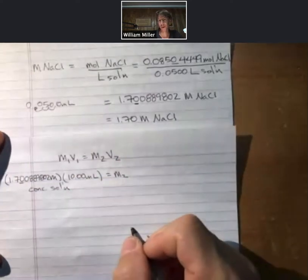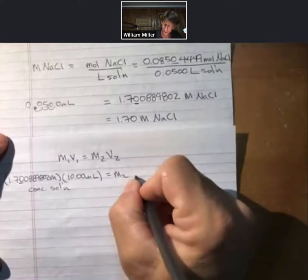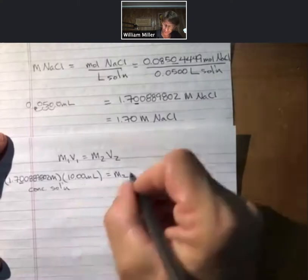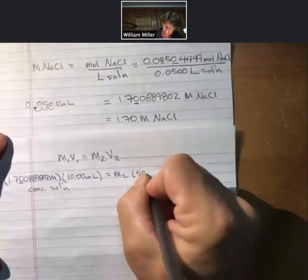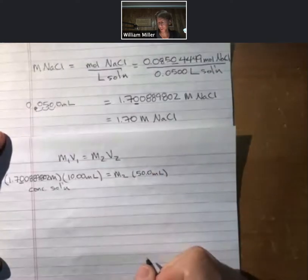We don't know our diluted concentration, but we do know that we took that 10 milliliters and diluted it to 50 milliliters in our graduated cylinder, so 50.0.